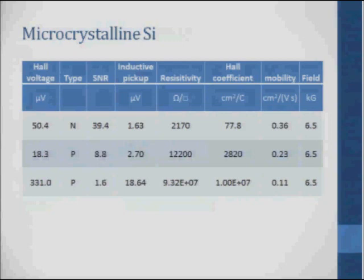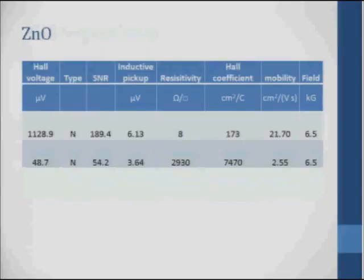Some zinc oxide materials with much higher mobilities and magnetic fields: the Hall voltages were fairly high with good signal-to-noise ratios, and these were N-type materials. The inductive pickups were small, so these were fairly easy, straightforward materials to measure with the AC method.